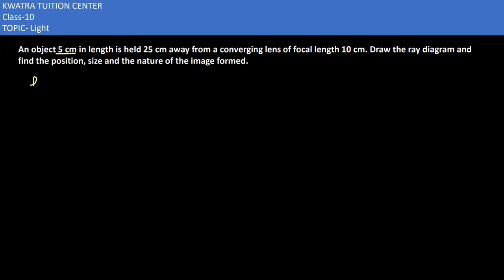Object ka length given is height which is 5 cm. The object is placed at distance u which is -25 cm. Focal length given and convex lens ka focal length is always positive. Why positive? Because our rays meet on the right side. In convex lens case, it would be f as positive 10 cm.